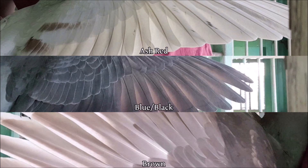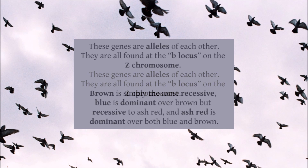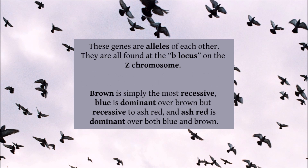There are three options for base colour: brown, blue, and ash red. Some people like to call the blue colour black or blue-black because the same pigment and gene creates both colours, but I find it easiest to simply call it blue. These genes are alleles of each other — allele means alternative — and they are all found at the B locus on the Z chromosome. Brown is simply the most recessive, blue is dominant over brown but recessive to ash red, and ash red is dominant over blue and brown.